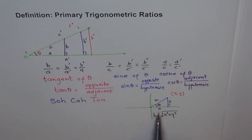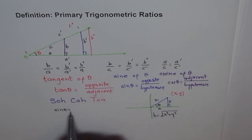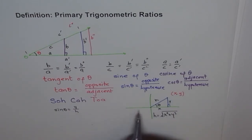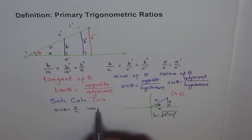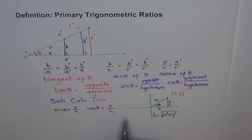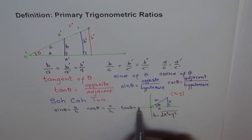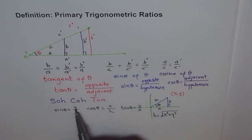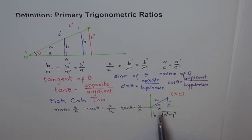So here we can write: sine theta equals Y over H — the Y coordinate over H. Cosine theta is adjacent, which is X over H. And tan theta is opposite over adjacent, so Y over X. So if I give you a coordinate point, let's say 3, 4, you can plug in the values and get the value of sine theta. You get a value — it is a ratio.